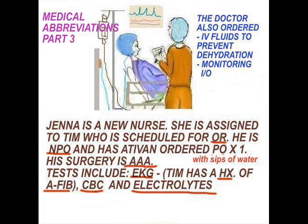In my other videos, I discuss this in greater detail. And electrolytes — of course, you know that includes potassium, sodium, magnesium — there are several tests that are included. He's going to have what kind of surgery? It's called AAA — often referred to as a triple-A — and AAA means abdominal aortic aneurysm. If you go to dearnurses.com, there is a simple and sweet case study on AAA, abdominal aortic aneurysm.